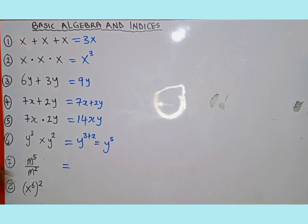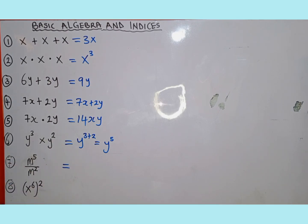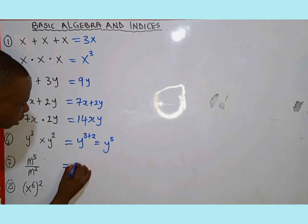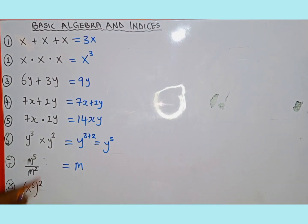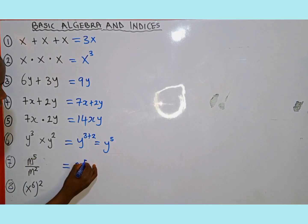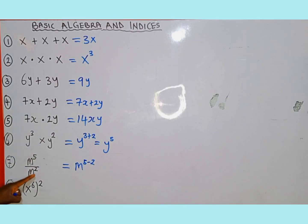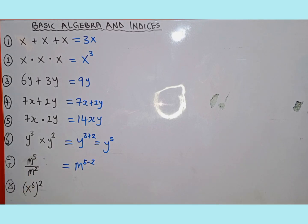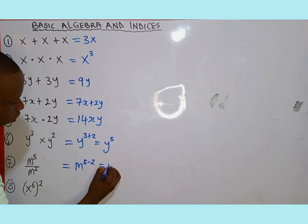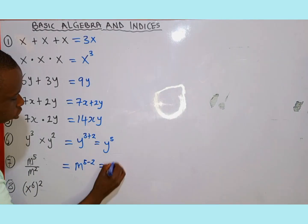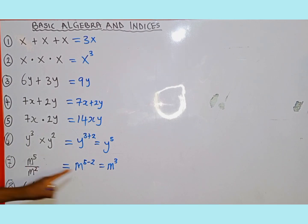Number seven is m to the fifth power divided by m to the second power. We notice the bases are the same, so this is the division law of indices. We write the base and subtract the powers: 5 minus 2 gives us m to the third power.